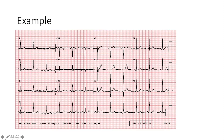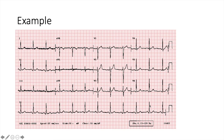The next thing to look at is the heart rate. Counting the ECG complexes, there are 12 QRS complexes, which tells us the heart rate is about 72 — that's normal. The next thing is the rhythm. Each QRS complex is about the same distance from each other, so this is a regular rhythm.